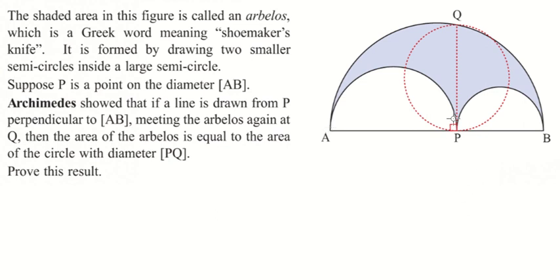Suppose P is a point on the diameter AB. Archimedes showed that if a line is drawn from P perpendicular to AB, meeting the arbelos again at Q, then the area of the arbelos is equal to the area of the circle with diameter PQ. We're going to prove this result.